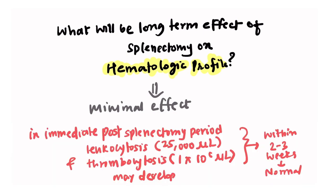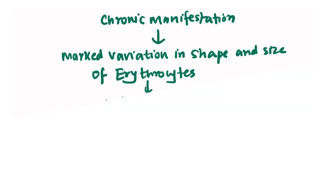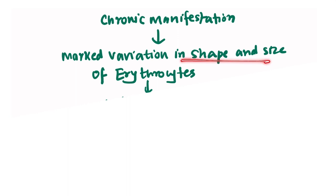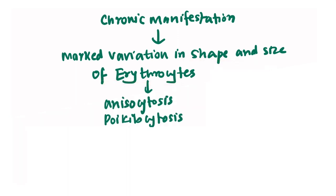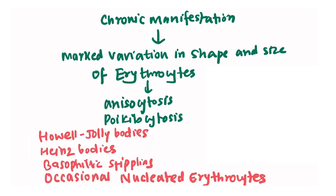The long-term effect of splenectomy on hematological profile is minimal. In the immediate post-splenectomy period, leukocytosis up to 25,000 and thrombocytosis up to 10 lakhs can be seen, but this recovers within 2 to 3 weeks. The chronic manifestations include marked variation in shape and size of erythrocytes — anisocytosis and poikilocytosis — as well as Howell-Jolly bodies, Heinz bodies, basophilic stippling, and occasionally nucleated erythrocytes.